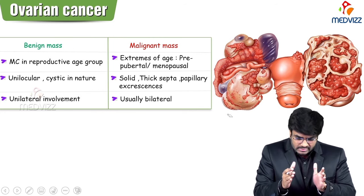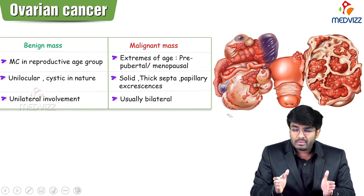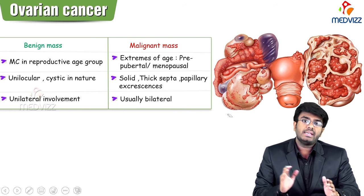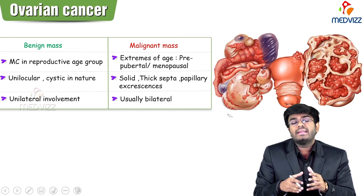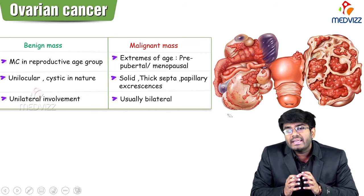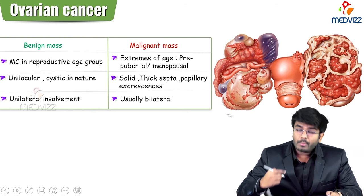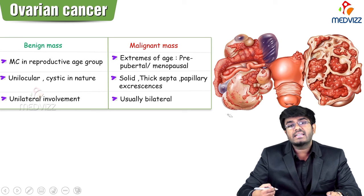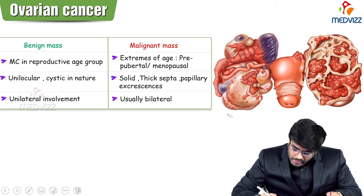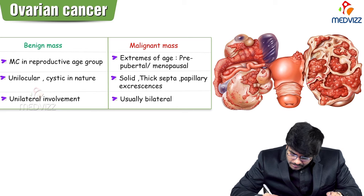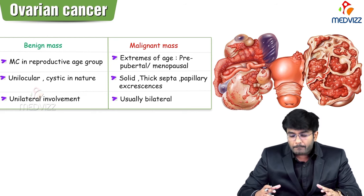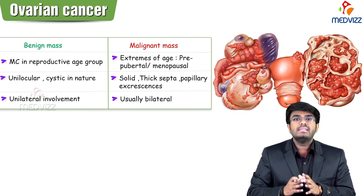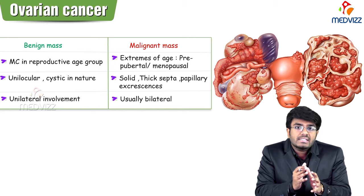Exceptions are there; these are guidelines, not gold standard points. Benign masses are usually unilocular and cystic in nature. If it's a malignant mass, it is mostly solid in consistency with multiple septa. What you are seeing on top is a serous cystadenocarcinoma of the ovary, where you can see thick septa, making it multi-loculated with solid growth inside.